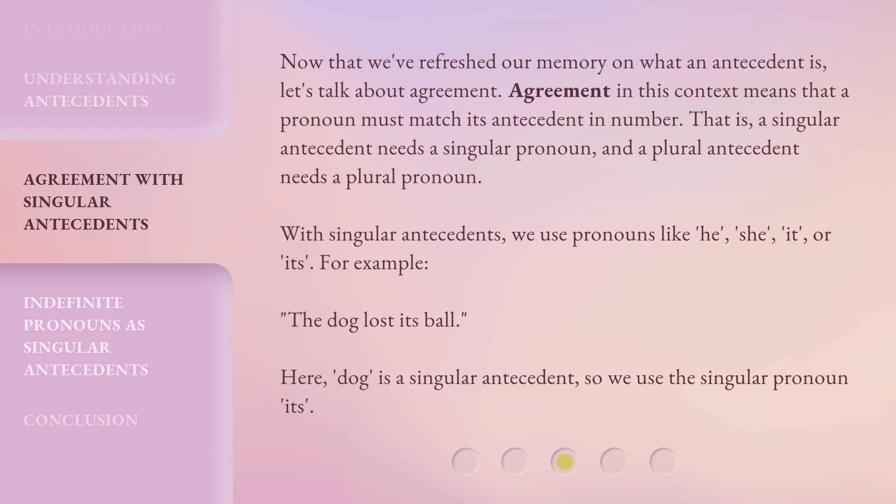A plural antecedent needs a plural pronoun. With singular antecedents, we use pronouns like 'he,' 'she,' 'it,' or 'its.'